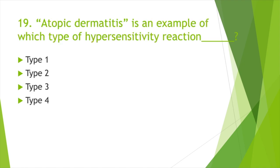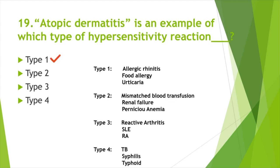Atopic dermatitis is an example of which type of hypersensitivity reaction? Option A: Type 1, Option B: Type 2, Option C: Type 3, Option D: Type 4. Answer: Option A, Type 1. Examples of Type 1: allergic rhinitis, food allergy, urticaria. Examples of Type 2: mismatched blood transfusion, renal failure, pernicious anemia. Examples of Type 3: reactive arthritis, SLE, rheumatoid arthritis. Type 4: tuberculosis, syphilis, and typhoid fever.